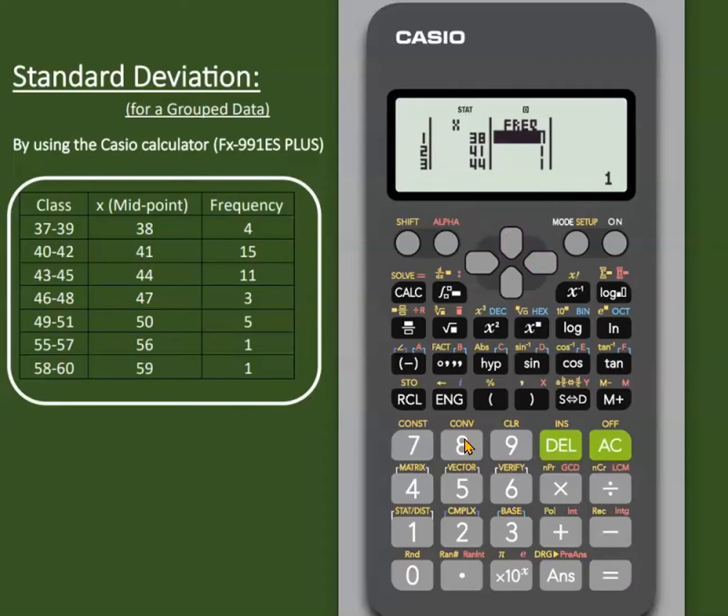We'll change the values created by default by the calculator: 4, 15, 11, 3, 5, 1, and 1.